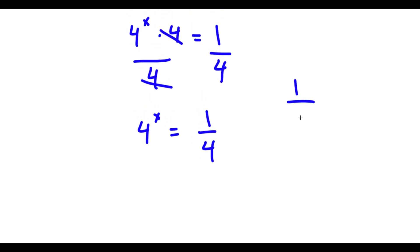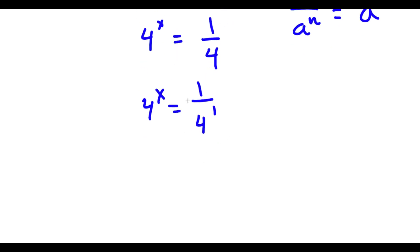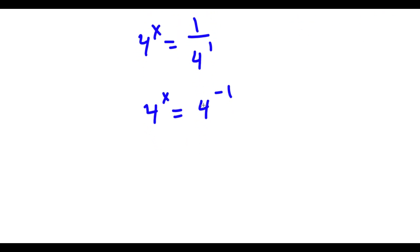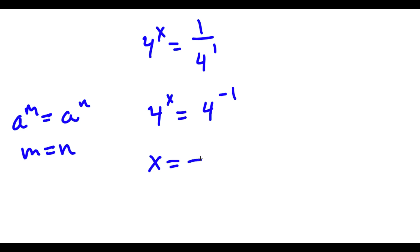Now if I have something in the form 1 over a to the power of n, this is the same thing as a to the power of negative n. So 1 over 4 we can rewrite as 4 to the power of negative 1. And if I have something in the form a to the power of m is equal to a to the power of n, then m is equal to n. So 4 to the power of x equals 4 to the power of negative 1, meaning x is equal to negative 1.